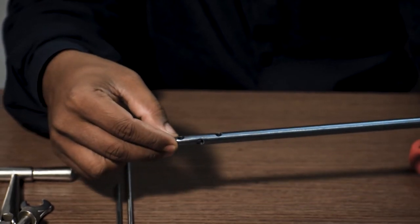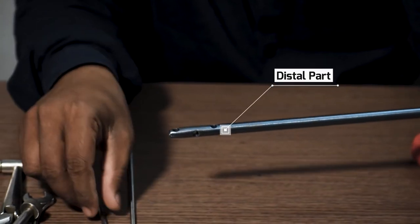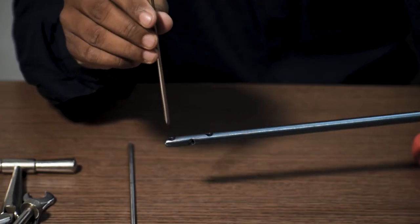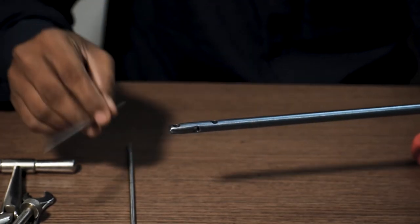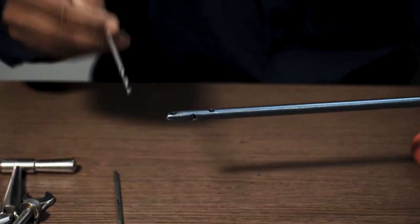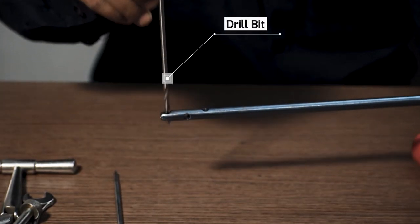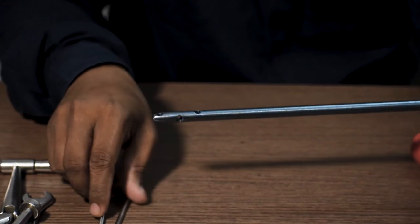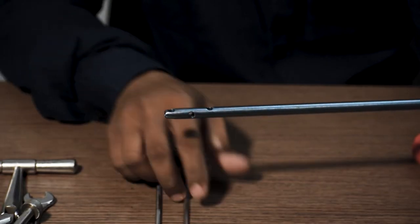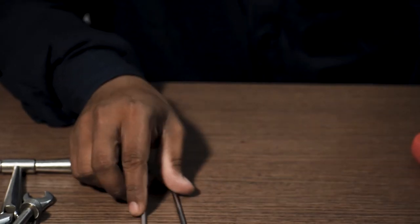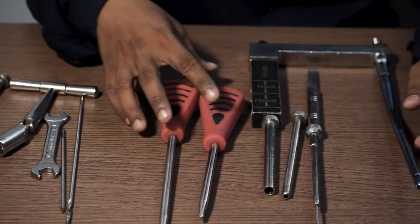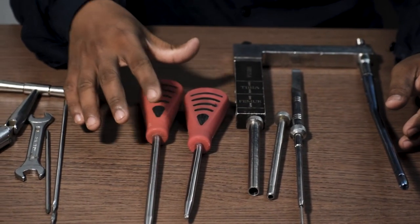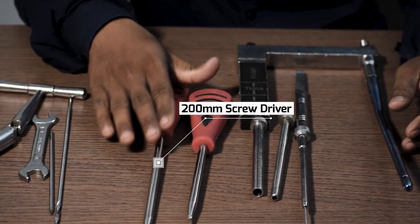This part is the distal end of tibia nail. Now surgeon can use either a Steinmann pin or a drill bit to drill through this hole. There are two variants of screwdrivers used for this tibia nail procedure: 200 mm and 150 mm.